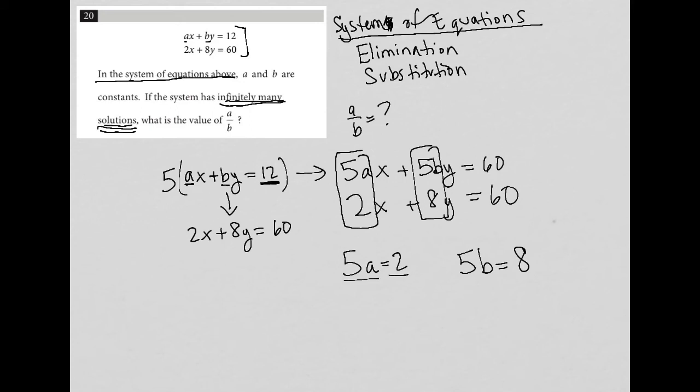So solving for A, I get A equals 2/5. Solving for B, I get B equals 8/5.